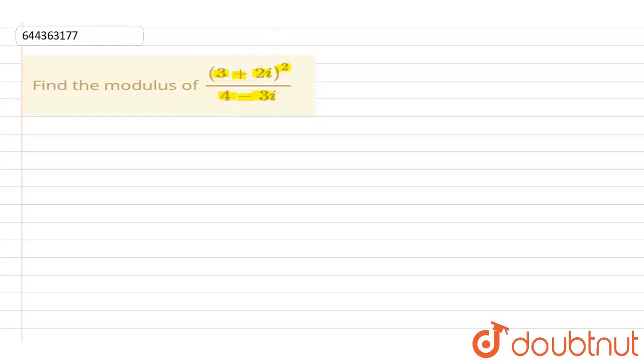Now in this question we are going to use two results, which is: mod of z1 divided by z2 is equal to mod of z1 divided by mod of z2. This is the first case.